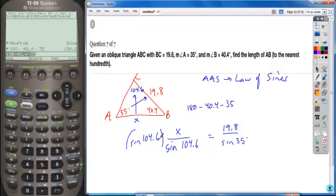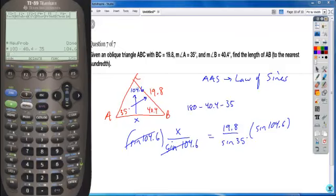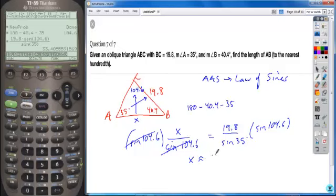Multiply both sides by sine of 104.6 to get our variable completely isolated. And then just calculate 19.8 times the sine of 104.6 divided by the sine of 35. I already have a decimal in my calculation, so it's going to give me my solution to the nearest hundredth, about 33.41 would be my missing link.